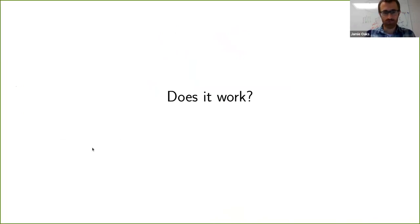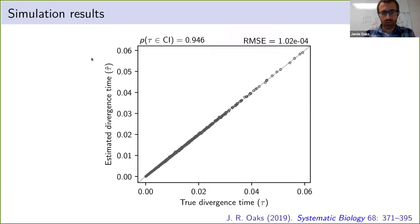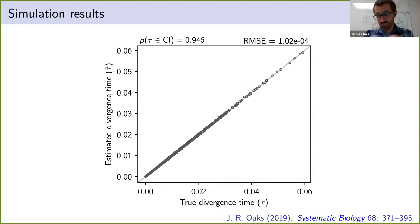So does it work? First thing we did: simulate lots of data, apply the method to those simulated data sets, and see how it performs. Looking at simulations where we know the true divergence time, we want the estimates to fall along the one-to-one line — and they do. The 95% credibility intervals are small but not too small, because they're covering the truth 95% of the time, which is the exact frequentist behavior we want.